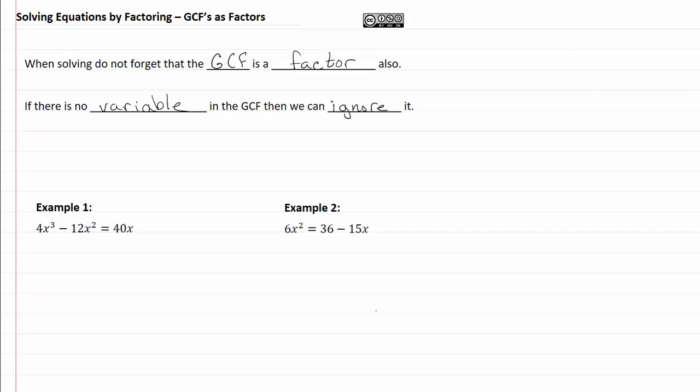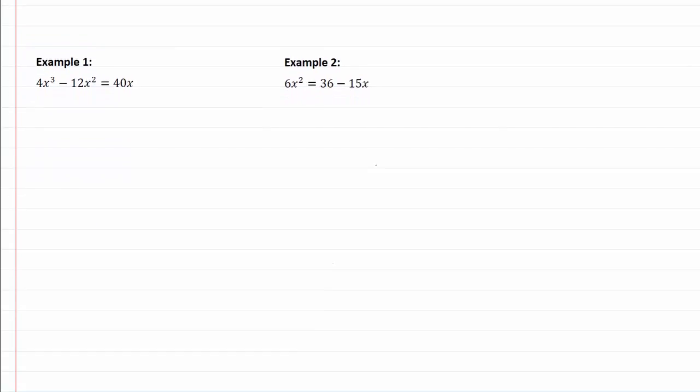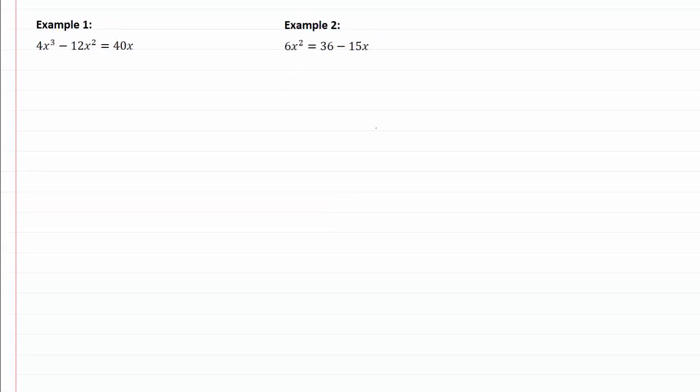So let's take a look at our two examples here. In example one, we have 4x³ - 12x² = 40x. So the first thing we want to do is get that 40x on the other side. We'll do that by subtracting 40x from both sides.